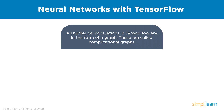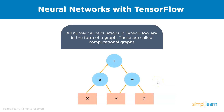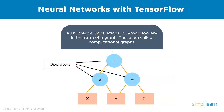Lazy computing is representing computation without actually performing it until it is asked. To create computational graphs, we represent our data flow — the way data flows in our program — in the form of a graph. On screen we have a simple graph with data x, y, and a constant 2 being fed into operator nodes: multiplication and addition. The data inputted to our graph is in the form of tensors, and even the constant 2 must be saved as a tensor before computation. The nodes perform various mathematical operations on our tensors.